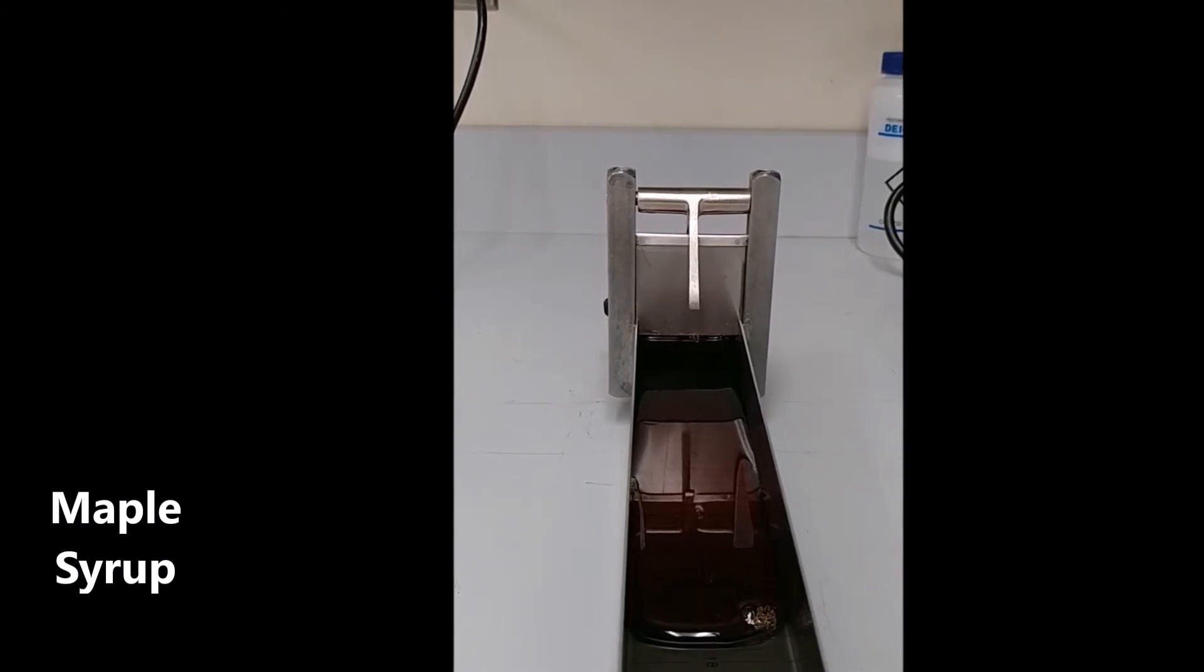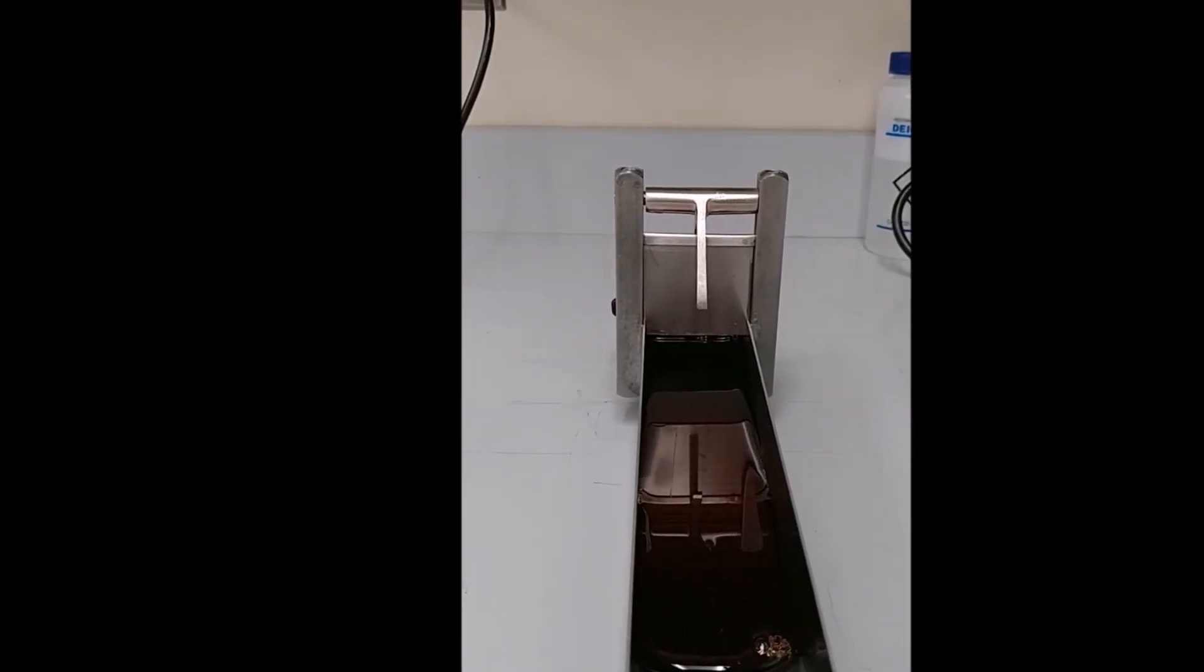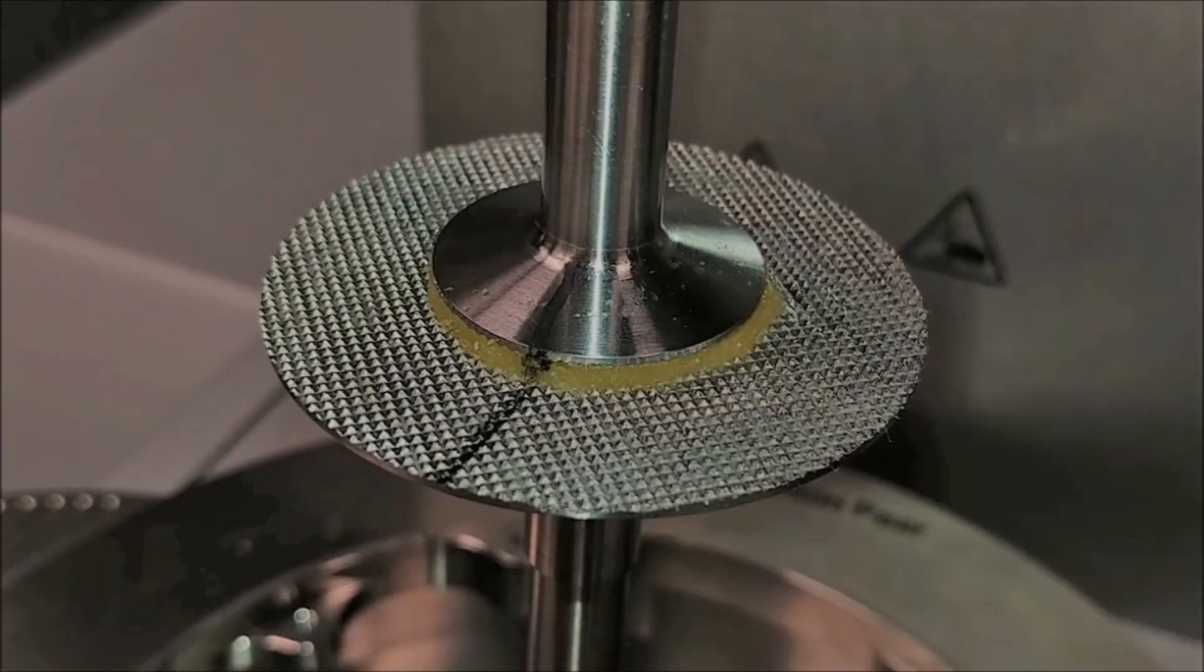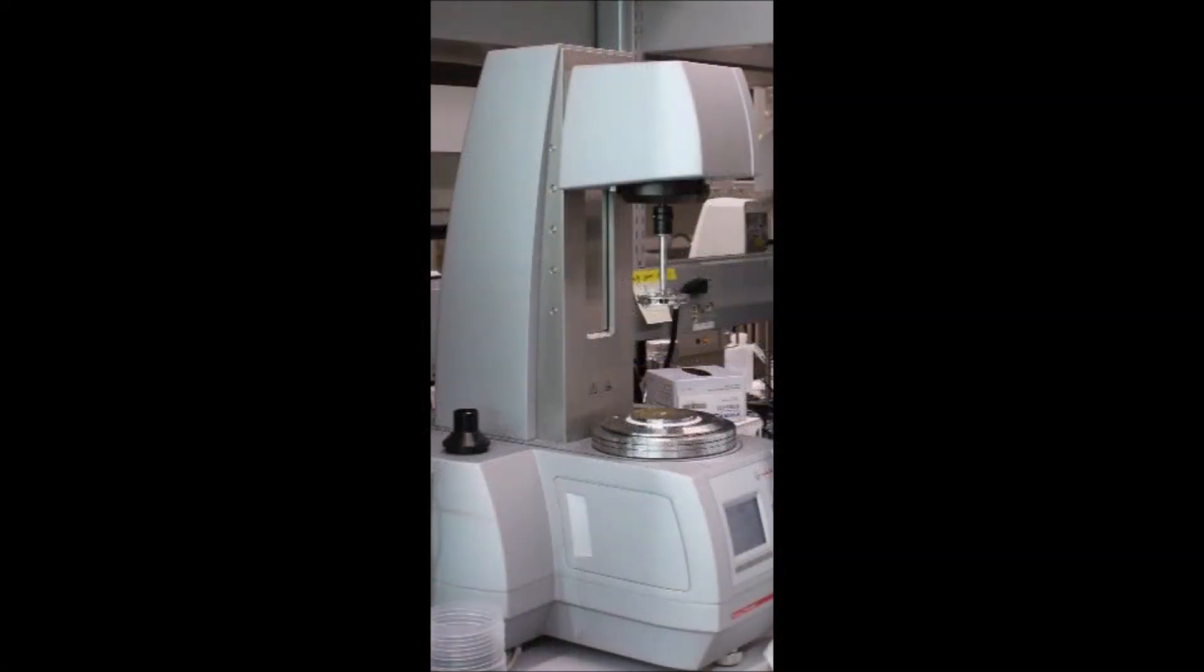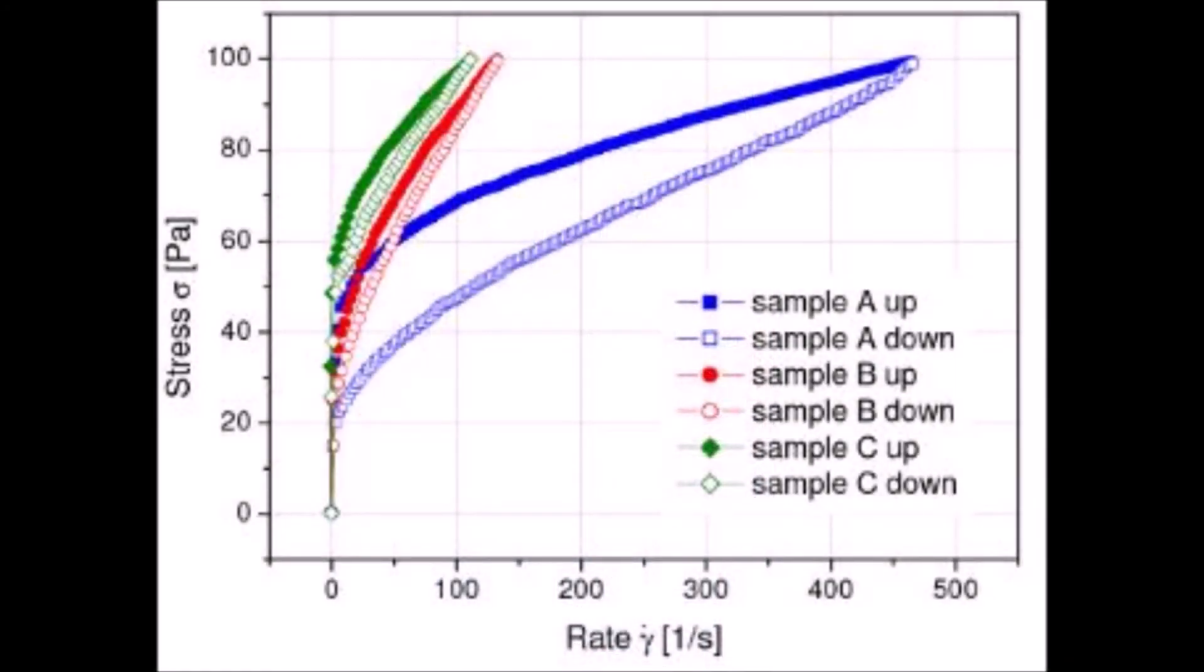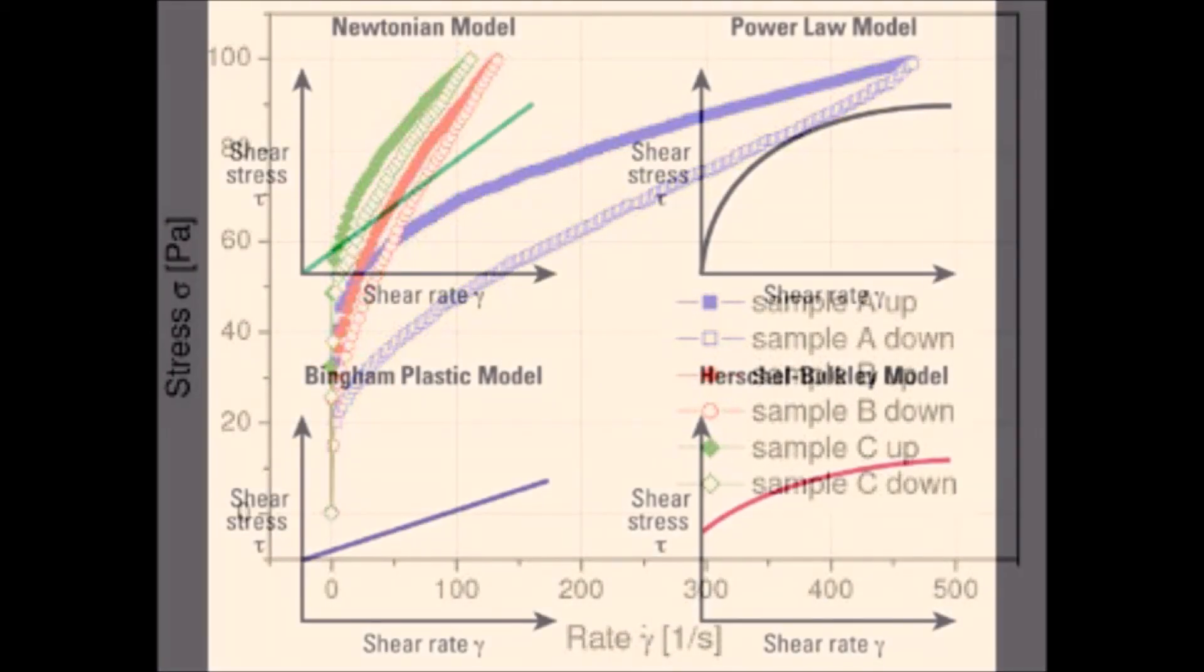For measuring material properties that can be quantified and used for calculations, the best tool for that job is called a rheometer. With this fancy piece of machinery, we can measure stress over shear rate. This data can be used to gain information about fluid flow and to classify which type of behavior it is exhibiting.